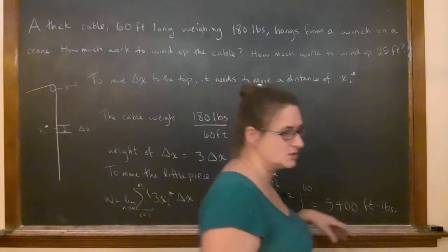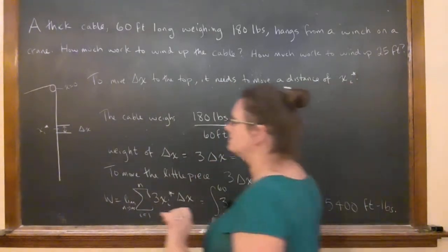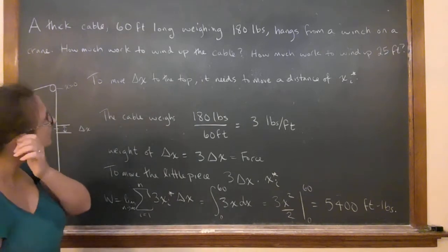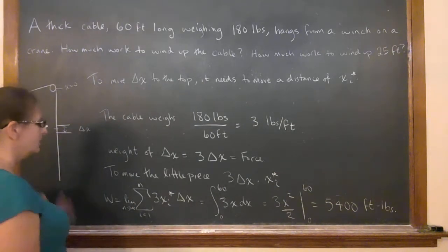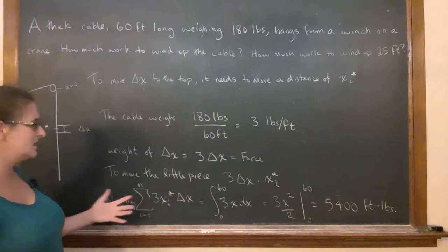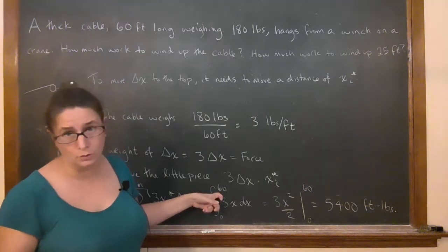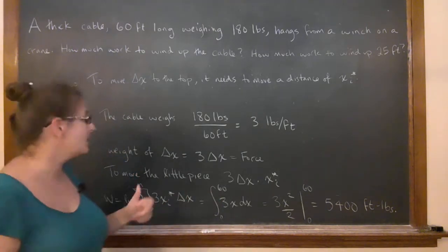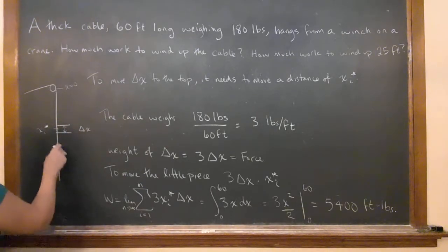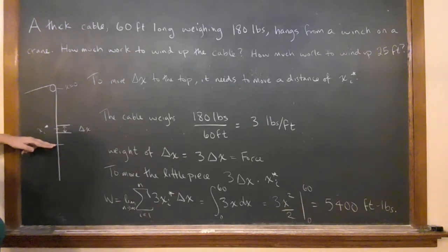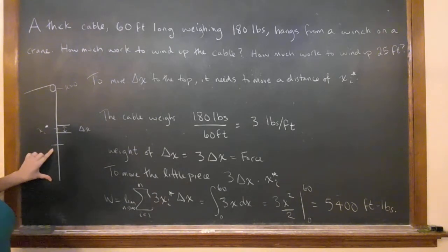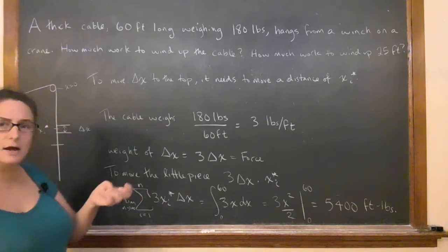Now, the second question is a little bit tricky. How much work to wind up 25 feet? The setup's going to be the same thing. Instead of winding up the whole 60, I just go to 25 here. True, you do do that, but you have to think about it. Because 25 feet is here, I'm running that all the way up, but this whole part also has a weight. So this part also adds to the process. It's like I have an additional weight on the bottom that I have to counter in.